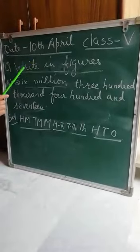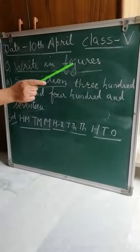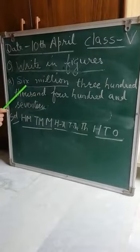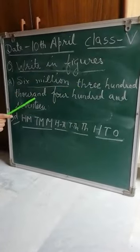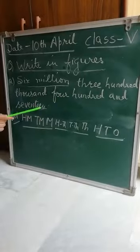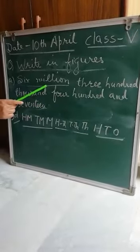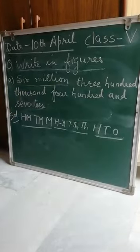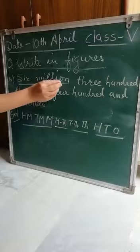Good morning children. Today we have the question: write in figures. The question is 6,300,417. Now this is an international system because it has a million. Now we do the grouping first.